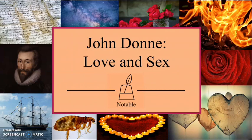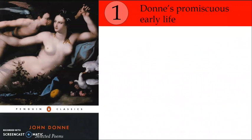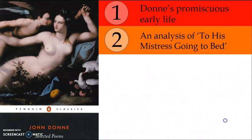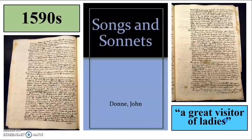Hello and welcome to the second video in this series on John Donne. In this episode we'll be discussing the theme of love and sex in Donne's work. We'll begin with a discussion of Donne's promiscuous early life, which will lead into a close reading of his poem 'To His Mistress Going to Bed.' We'll then discuss his marriage to Anne Moore, the motif of the microcosm in his love poetry, and conclude with an analysis of 'The Good Morrow.'